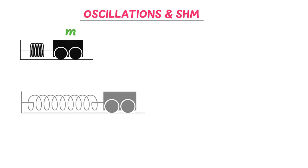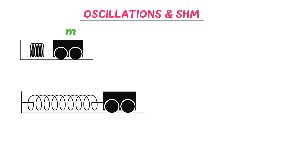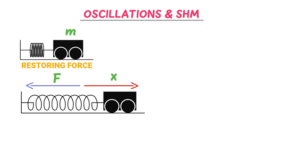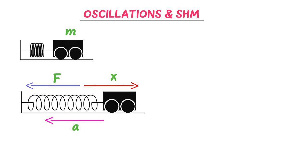I displace this mass m from its mean position. Let the displacement of the mass from its mean position be x. Due to displacement x, a restoring force F is produced in the elastic spring. This restoring force produces acceleration in the mass, and as a result the mass moves back and forth about its mean position.